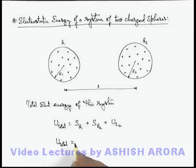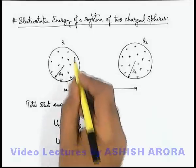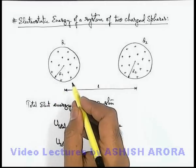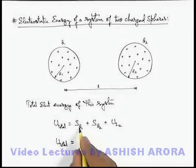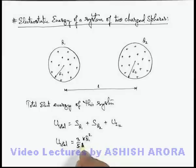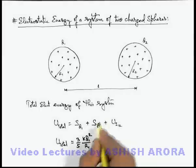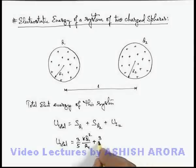So here the total energy can be given as: for a uniformly charged sphere of radius r1 and charge q1, self energy can be written as 3/5 k q1²/r1, plus for the second sphere similarly we can write it is 3/5 k q2²/r2.